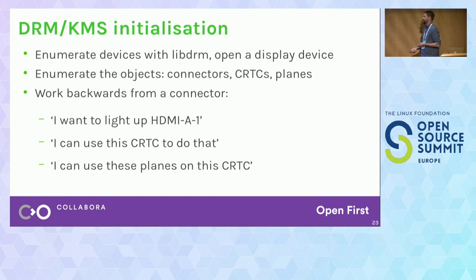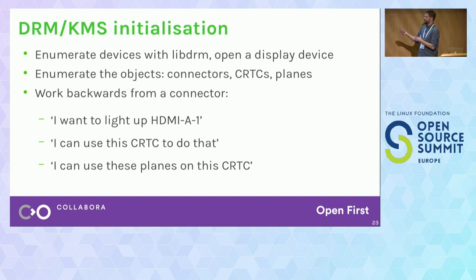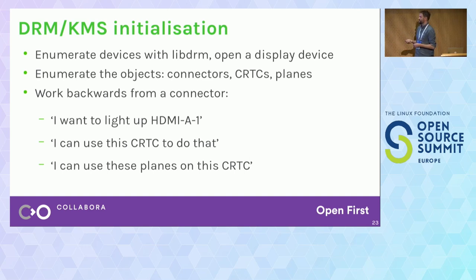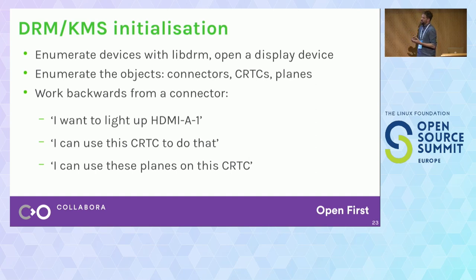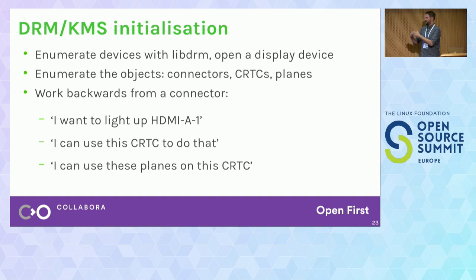Working with a DRM device: you start with your connector. Once you've enumerated everything, you've seen HDMI is connected and it says it can do 1080p. You work backwards: start with HDMI-A1, the CRTCs say 'I can work with these connectors,' you pick the one that works with HDMI-A1, and the planes say 'I can work with these CRTCs.' Working backwards, you pull out a tree of objects derived from the output you want to light up.